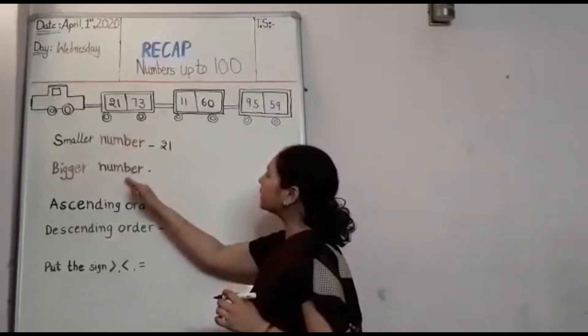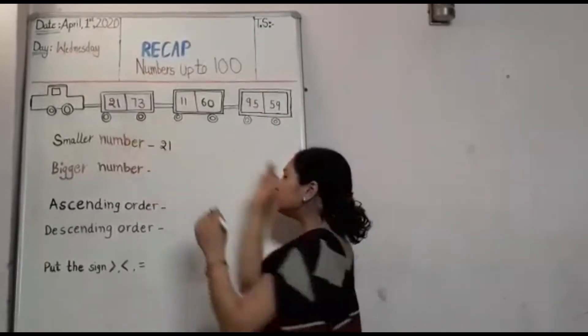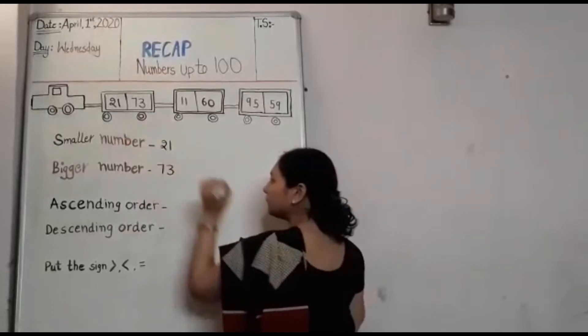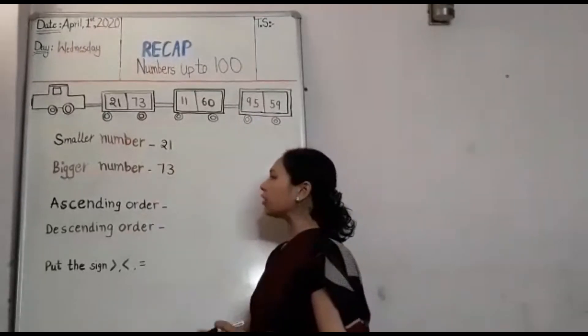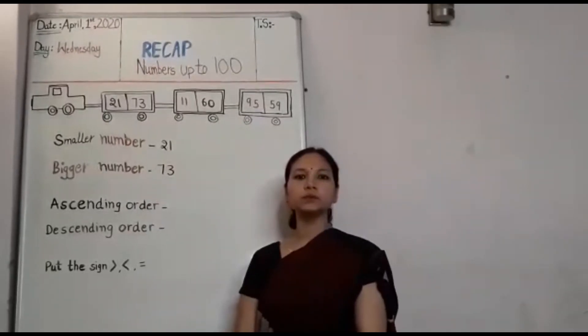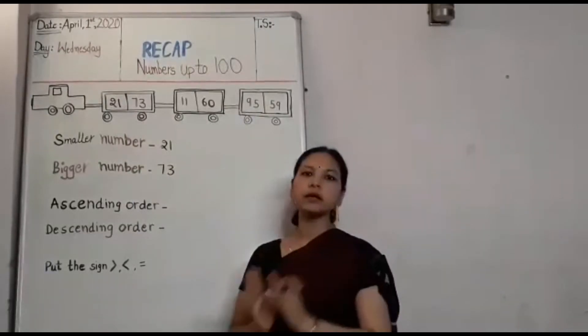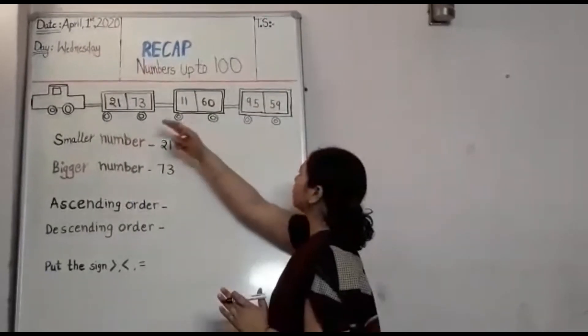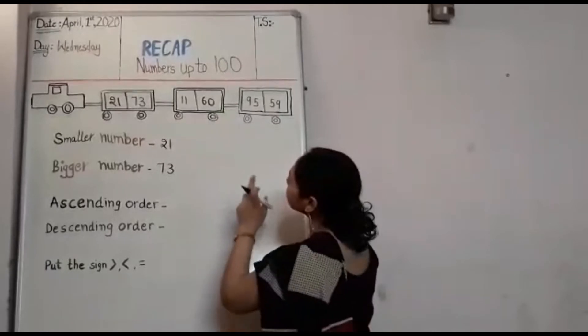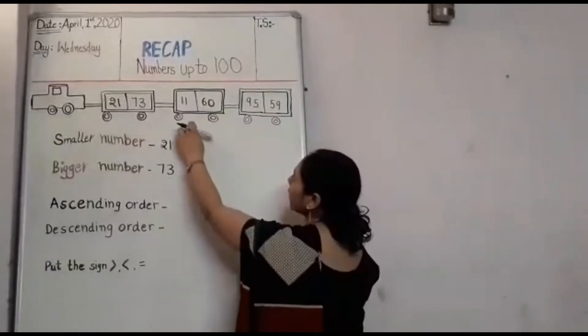And bigger number hai 73, jo counting mein baad mein aata hai. Ascending order, ascending order mein hum numbers arrange karte hain small to big. In numbers mein sabse pehle sabse chhota number 9 to 11 on the first, then number 21 on the second, then 59.